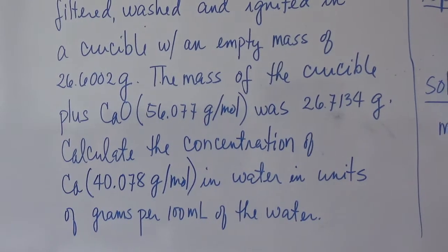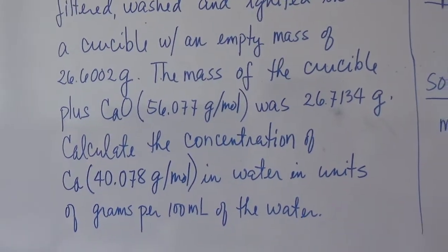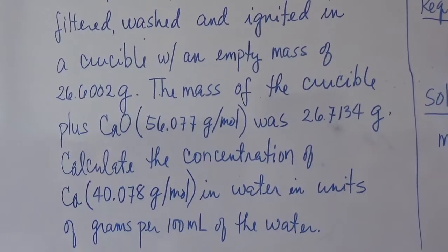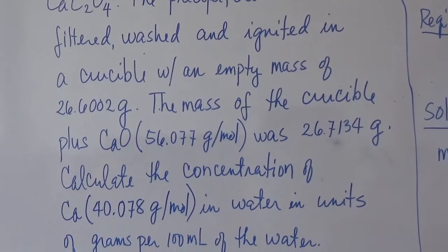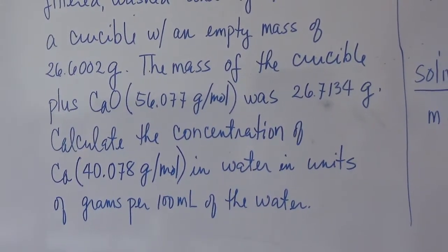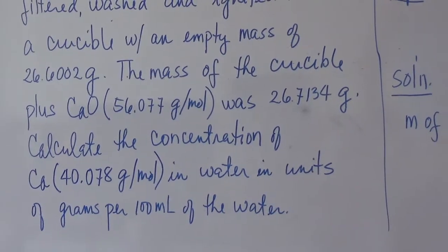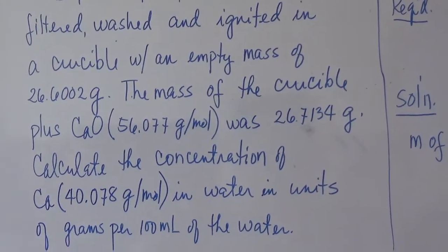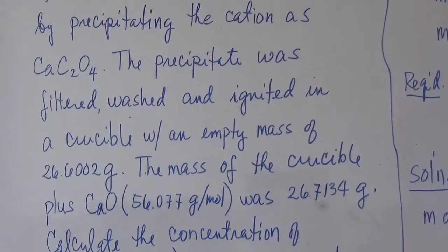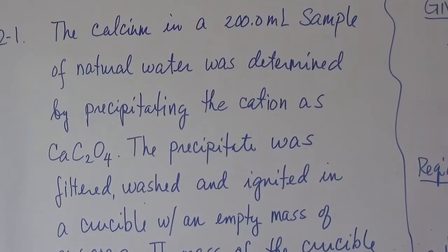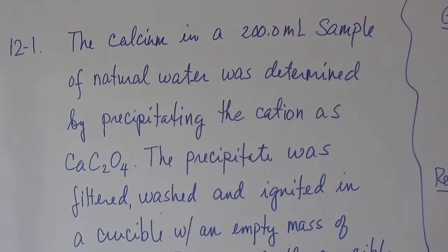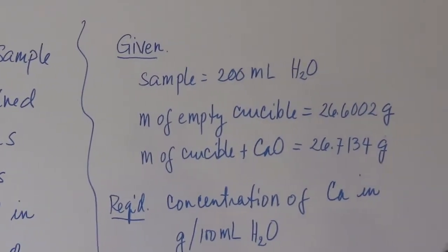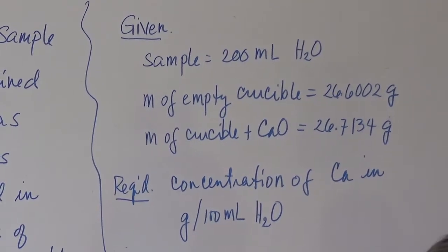The procedure for gravimetric analysis is always applied in this type of problem. As mentioned in our PowerPoint, in order to determine the amount of the unknown or desired substance, there must be two data that we need to know: one is the amount of the sample, and the other is the amount in grams of the dried precipitate or dried substance.